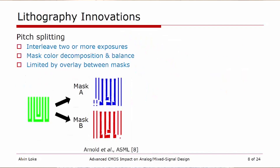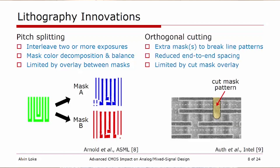One such lithography innovation is pitch splitting, where we interleave two or more exposures printed with a pitch achievable with conventional 193nm immersion lithography. This has the complexity of decomposing the mask and handling color balance. The limitation is overlay or misalignment between the masks. Another technique commonly used is orthogonal cutting, where an extra mask or two is introduced to break line patterns and reduce line-end-to-end spacing. This works because the ends of the cut mask patterns experience rounding due to near-field diffraction effects and will not appear in the final printed pattern. However, this technique is also limited by cut mask overlay.